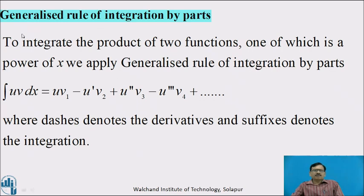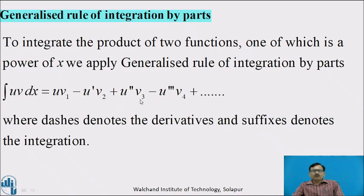Now we will see one of the important rules — the generalized rule of integration by parts. To integrate the product of two functions, one of which is a power of x, we apply the generalized rule of integration by parts: ∫u·φ dx = u·v₁ − u'·v₂ + u''·v₃ − ... and so on, where dashes denote the derivatives and suffixes denote the integrations.